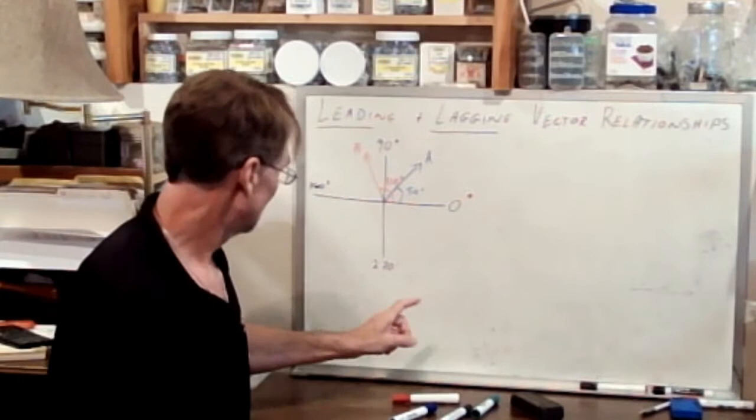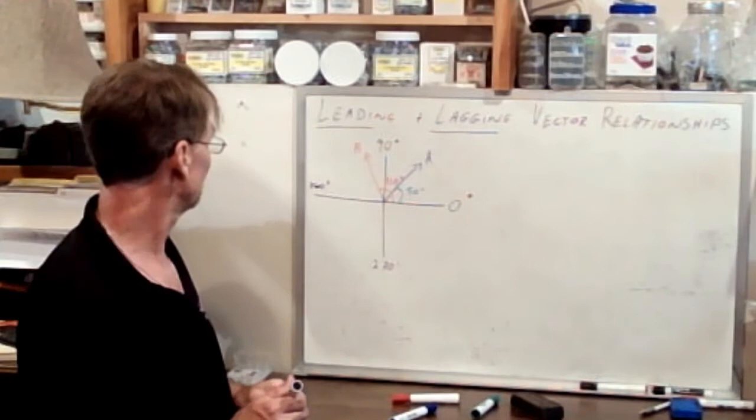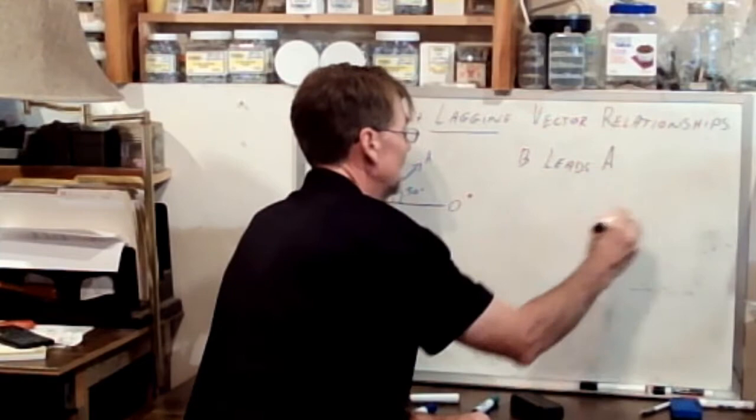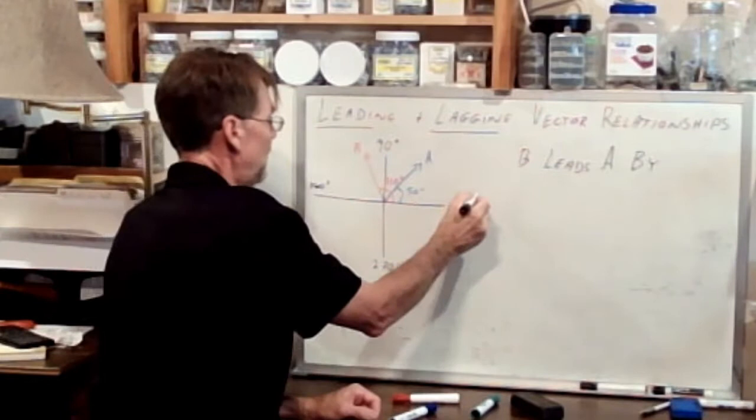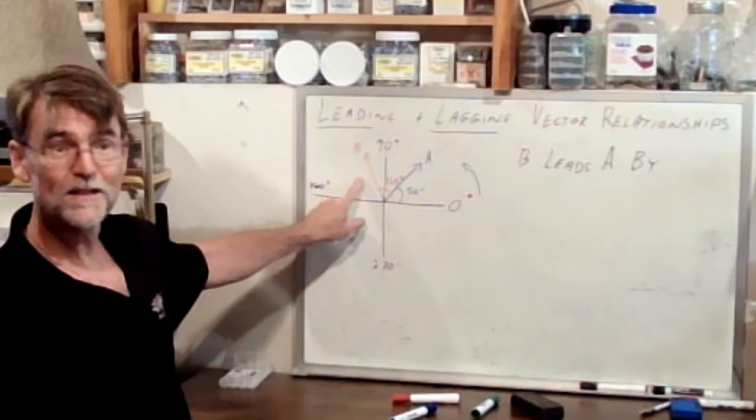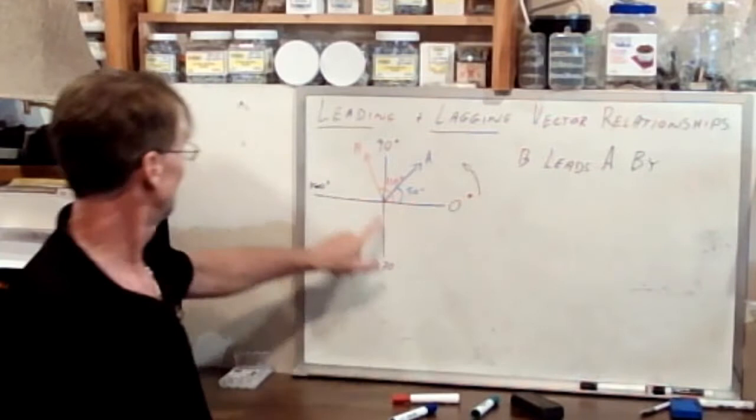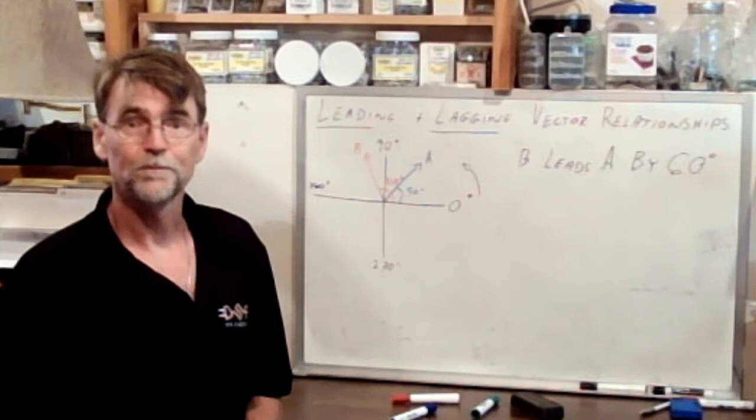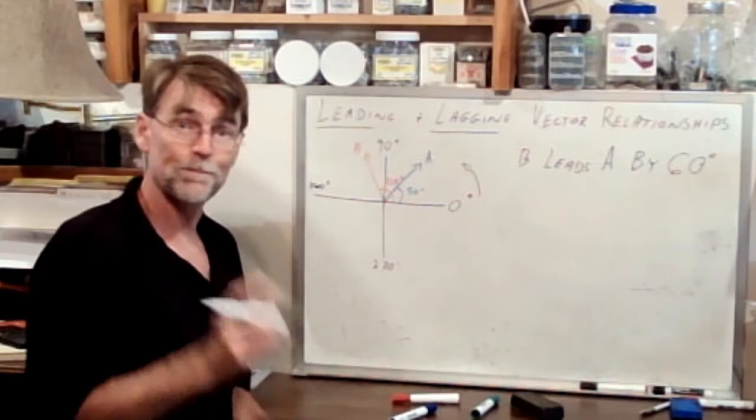We can now make statements about the leading and lagging relationships between these two vectors. The first statement I would like to make is that B leads A by how much? Remember that this is forward direction. This is a race track, this is the start finish line, and we're running around the track. B is winning the race. B is ahead of A. B leads A by how much? 110 degrees minus 50 degrees. B leads A by 60 degrees. That would be a true statement about the relationship between these two vectors, but not the only true statement.